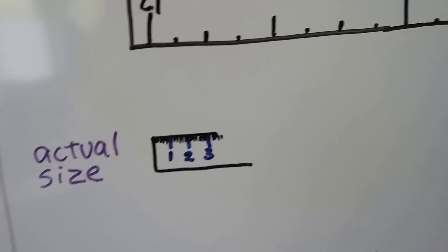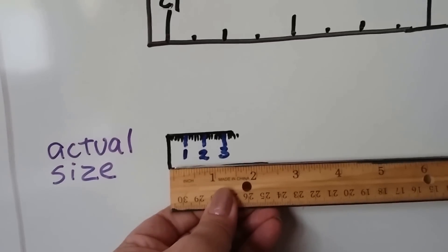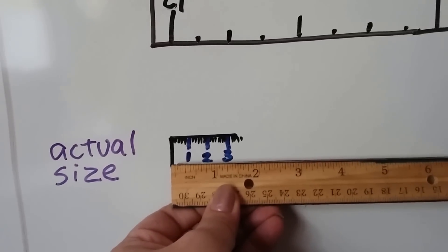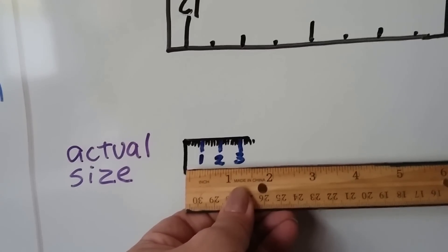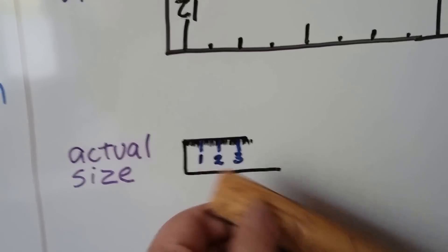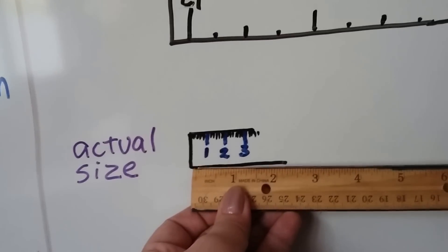If I flip my ruler over to inches, an inch is about two and a half centimeters. About two and a half of these, right in the middle between two and three, would be one inch.